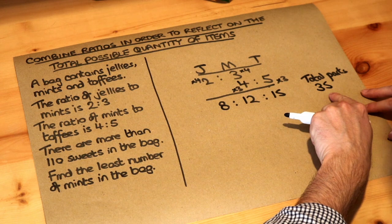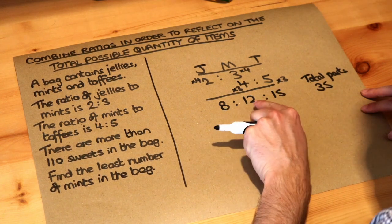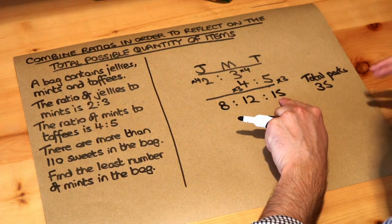So the total parts here, 8 plus 12 is 20 plus 15 is 35. So for each 35 sweets we have 8 are jellies, 12 are mints, 15 are toffees.